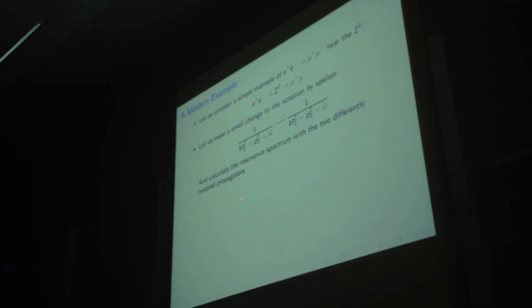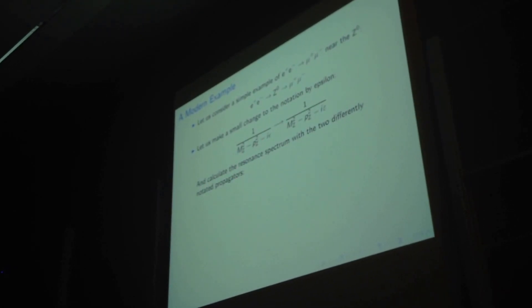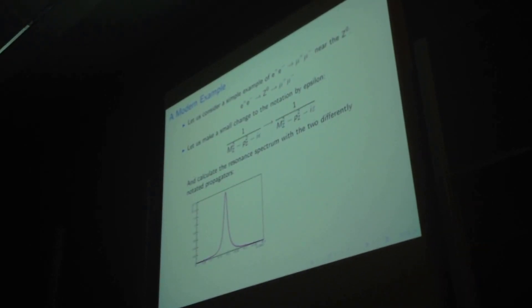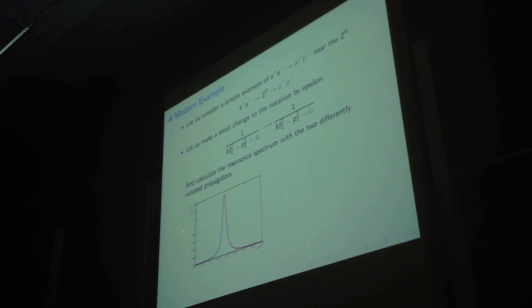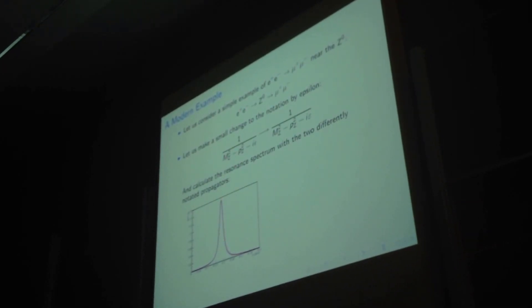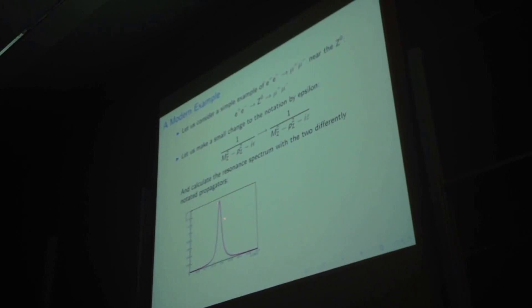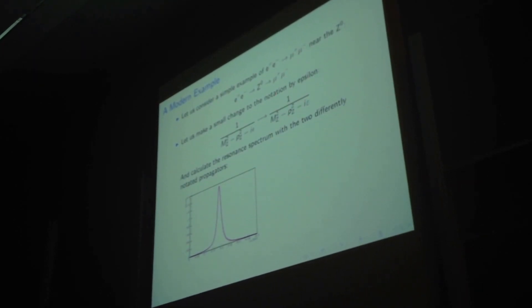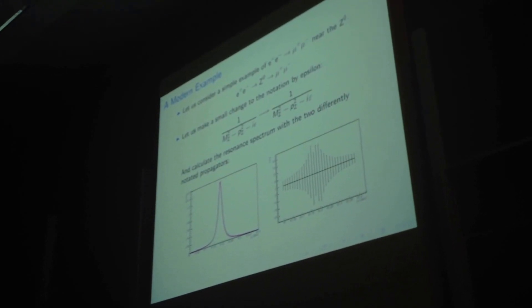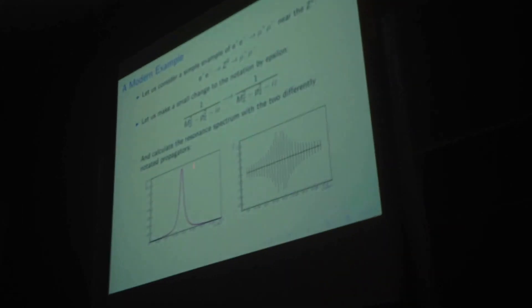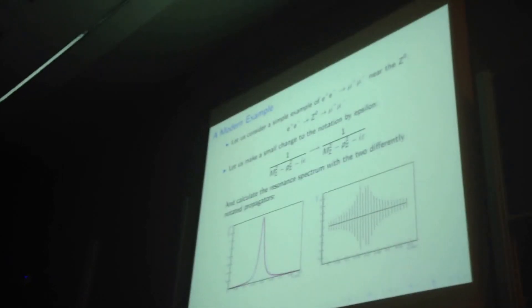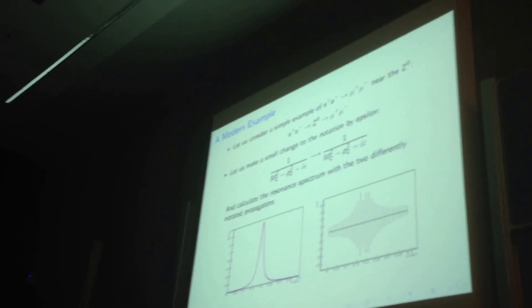And we'll make a calculation of the spectrum given these differently notated propagators. So, we've done that here numerically. You'll see here in the red thick band is given the propagator on the left. And the dashed blue line is the propagator on the right. Here we see the difference between them, given today's experimental uncertainties on the mass, where we've assumed no correlation between the mass and the width, given the two notations.